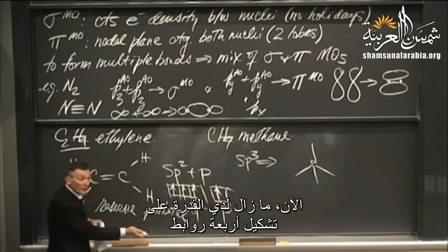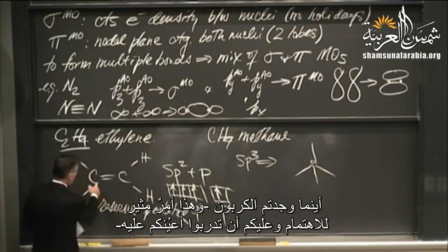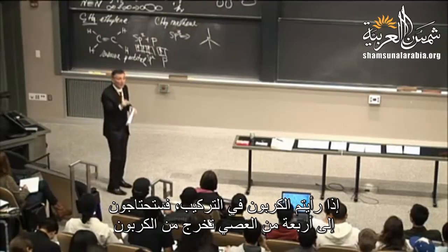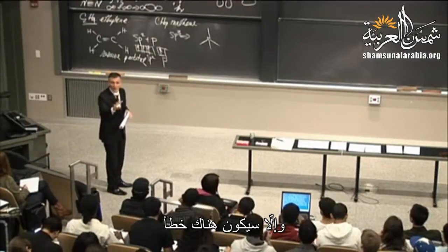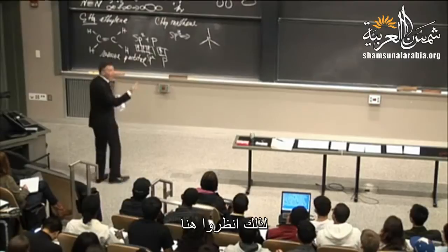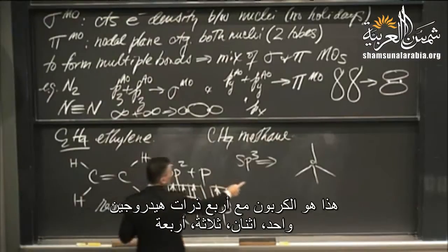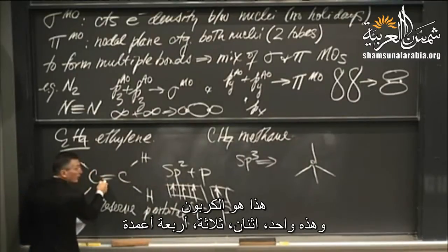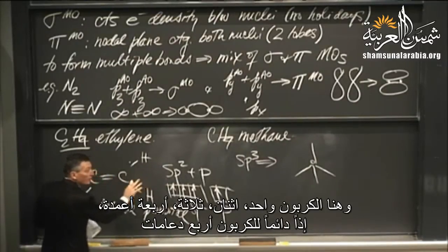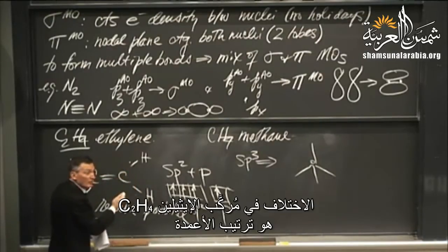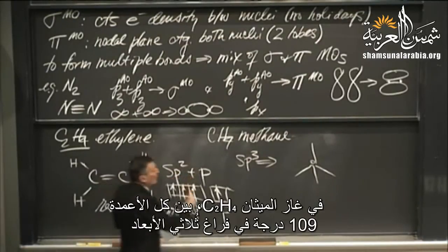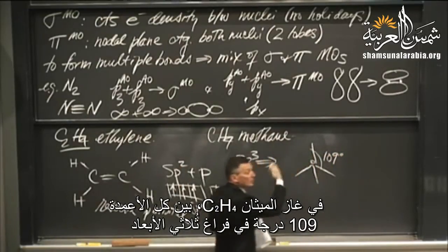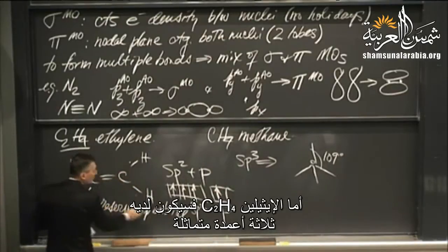I've got four electrons to place, and now I have the capability of forming four bonds. Whenever you see carbon, you need four sticks coming out — four struts — or else there's a spelling error. Carbon with four hydrogens, always four struts. It's not what's different here; it's the arrangement. With SP3, all four go at 109 degrees in three dimensions. With SP2, three are identical, because equal bond energies imply equal spatial disposition. Three bonds of equal energy lie in a plane, 120 degrees apart.